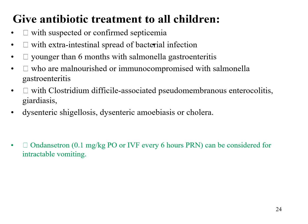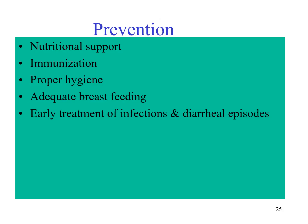Antibiotics are not given routinely for a child with diarrhea. Antibiotic is considered if there is suspected or confirmed septicemia, extra-intestinal spread of bacterial infection, in children younger than 6 months with Salmonella gastroenteritis, in malnourished or immunocompromised patients with Salmonella, or with Clostridium difficile-associated pseudomembranous colitis. If there is giardiasis or amoebiasis, give antiparasitic drugs accordingly. Dysenteric shigellosis, dysenteric amoebiasis, and cholera are treated appropriately. Give ondansetron 0.1 mg per kg IV every 6 hours as needed for vomiting. At the end of management, always counsel the patient and family about prevention of diarrhea.